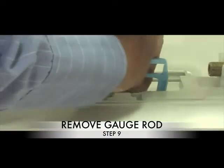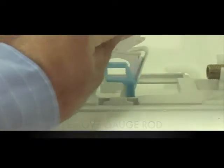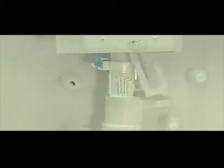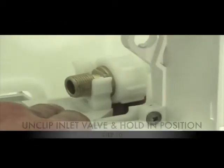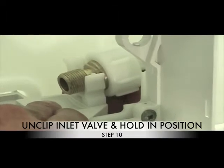Step 9: Remove your gate rod by pressing on top. Step 10: Unclip your inlet valve and hold in position until completed.